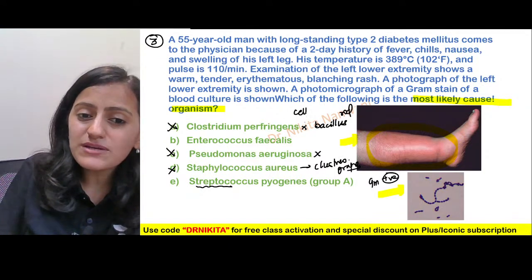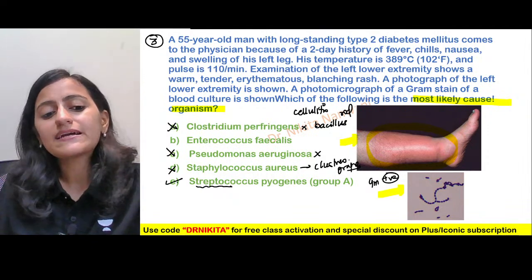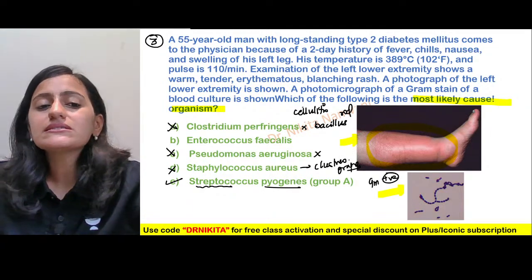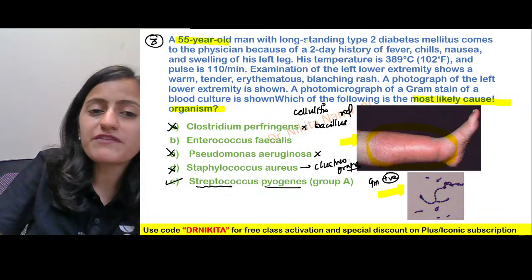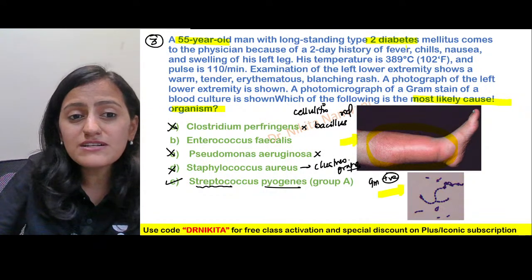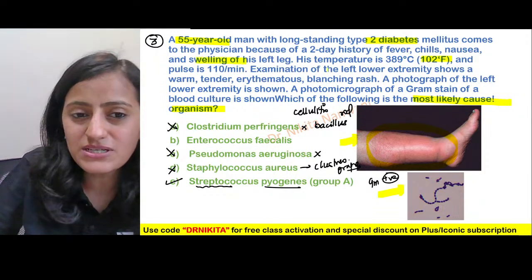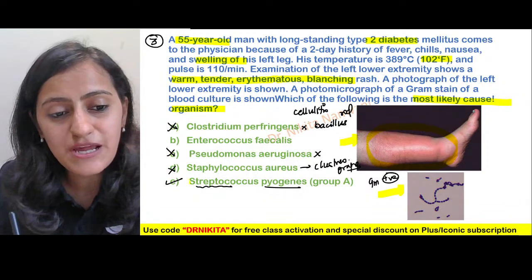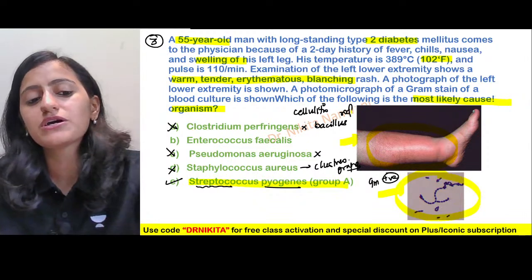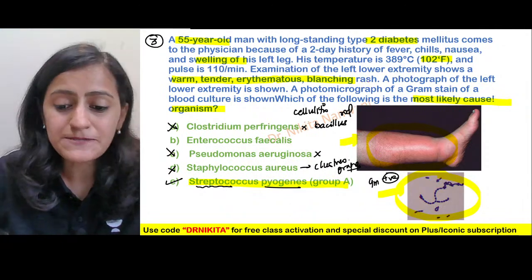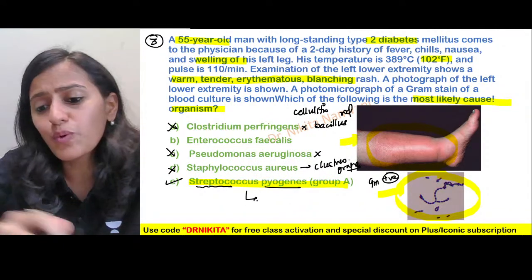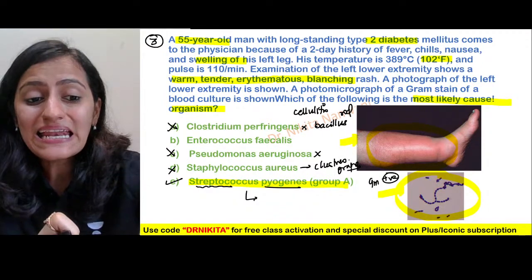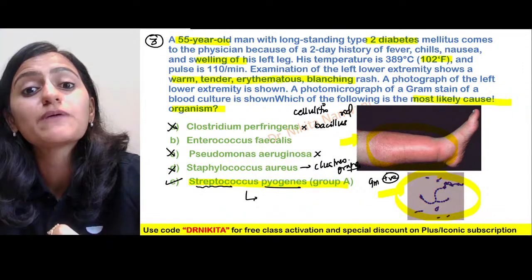The clinical picture shows redness of the skin — this is cellulitis. The causative organism for cellulitis is Streptococcus pyogenes. The case: 55-year-old man with diabetes mellitus, fever, chills, nausea, swelling, high temperature, tachycardia, and warm tender erythematous rash. So the causative organism based on the image is Streptococcus pyogenes. Now, what antibiotic sensitivity confirms this is Streptococcus pyogenes?